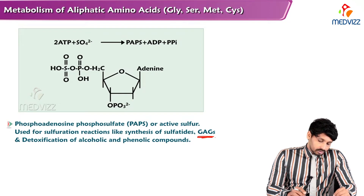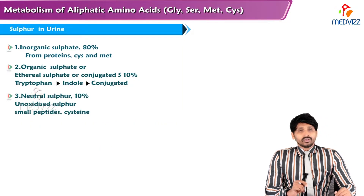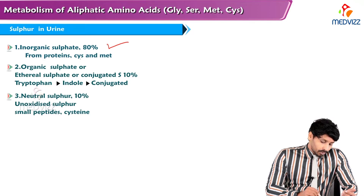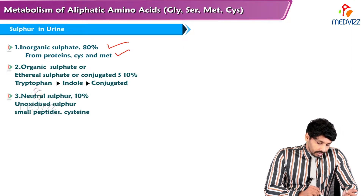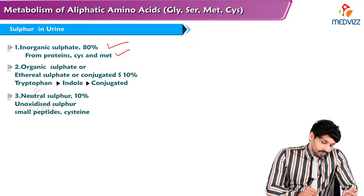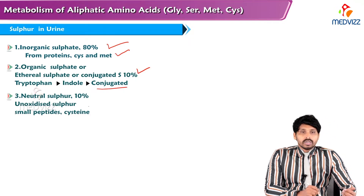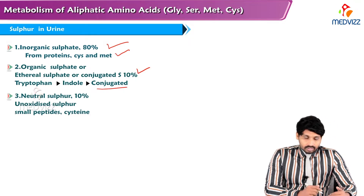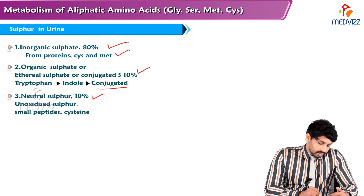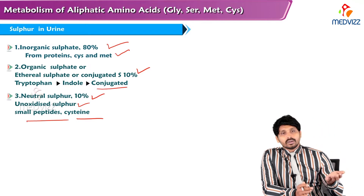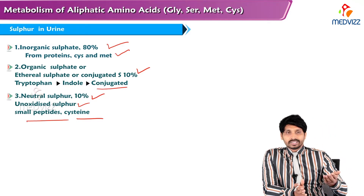PAPS, in association with sugar molecules that is glycosaminoglycans, provides sulfur. Regarding sulfur in urine: about 80% comes as inorganic sulfates from proteins — cysteine and methionine. Organic or ethereal or conjugated sulfates account for about 10%, from tryptophan and indolacetic acid conjugated substances. Neutral sulfur is another 10%, comprising unoxidized sulfur, small peptides, and cysteine.